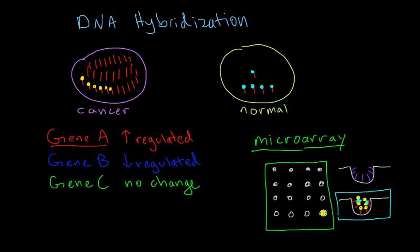A computer can scan every single one of these wells and determine whether the well is a brighter yellow or a brighter blue. If you see mainly yellow, that means there is a lot more of that specific gene's products being expressed in the cancer cell compared to the normal cell.